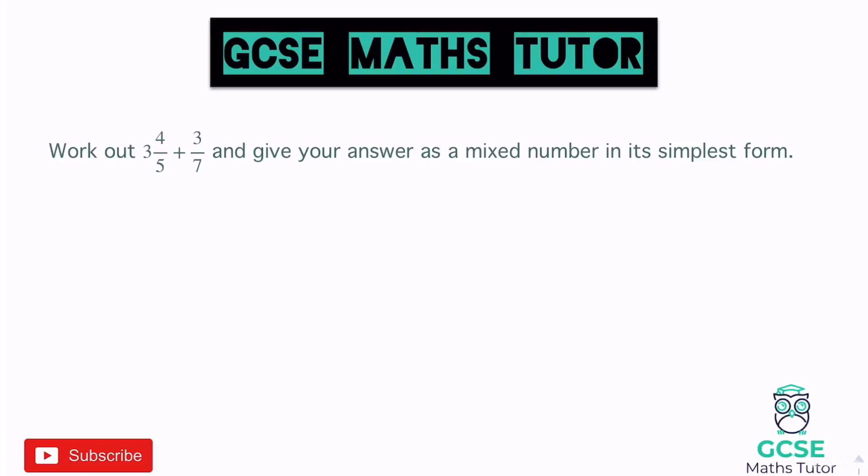In this video we're going to look at fraction calculations with mixed numbers — adding, subtracting, dividing and multiplying. We'll start with adding and subtracting with mixed numbers and have a look at all the bits to watch out for in different questions. Grab a piece of paper and a pen and make some notes. For the first one: work out three and four fifths add three sevenths and give your answer as a mixed number in its simplest form.